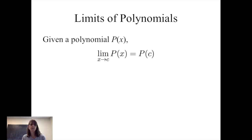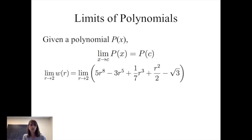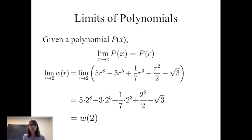Given a polynomial p evaluated at x, the limit of that polynomial as x gets close to c is simply the polynomial evaluated at c. For example, the limit of w evaluated at r as r gets close to two is simply the polynomial w evaluated at two.